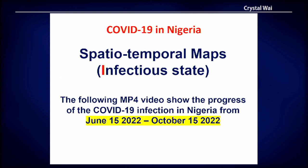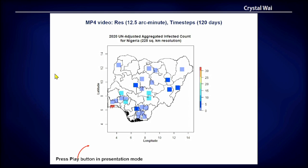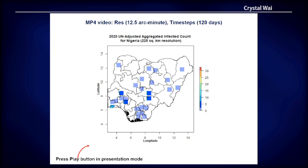Here I'll be showing a deterministic model simulation using Nigeria's data. We can see that Lagos is experiencing most of the level of incidence, as well as two other states. But as we near October, there are only a few instances of incidence remaining in Lagos.